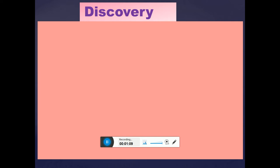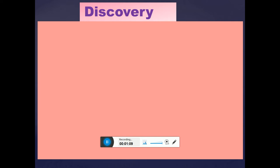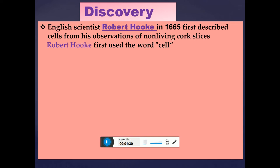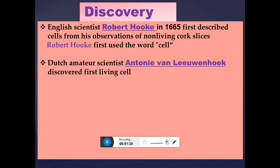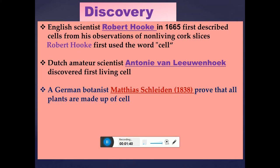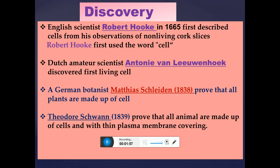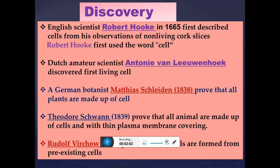Now we move to the discovery of cell, from which most examination questions are drawn. English scientist Robert Hooke in 1665 first described the cell from his observation of non-living cork slices from plants. Robert Hooke first used the word 'cell.' After him, Dutch scientist Anton van Leeuwenhoek discovered the first living cell. German botanist Schleiden worked on plant cells and proved that all plants are made up of cells.